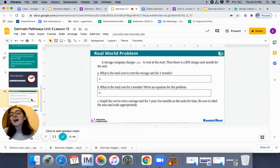So if you look at number nine, that video was linked on nine. Number 10 is where we start to do some work here. It says a storage company charged $100 to rent at the start, then a $50 charge every month for the unit. You need to tell me the total amount of money it's going to cost to rent this unit for two months. That's number one.